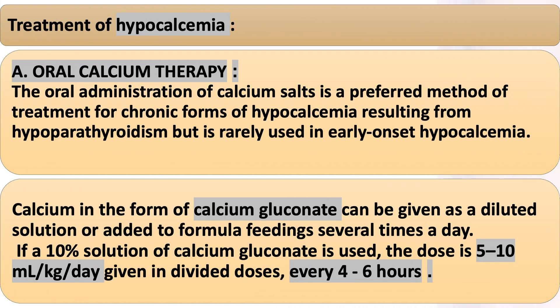Treatment of hypocalcemia — oral calcium therapy: The oral administration of calcium salts is the preferred method for chronic forms of hypocalcemia resulting from hypoparathyroidism, but is rarely used in early-onset hypocalcemia. Calcium in the form of calcium gluconate can be given as a diluted solution or added to formula feeding several times a day. If a 10% solution of calcium gluconate is used, the dose is 5–10 mL/kg/day given in divided doses every 4 to 6 hours.